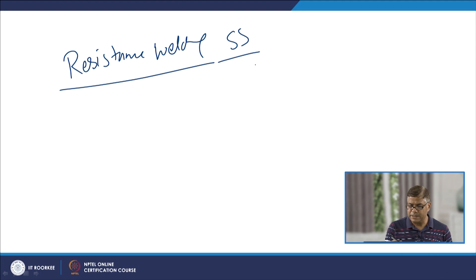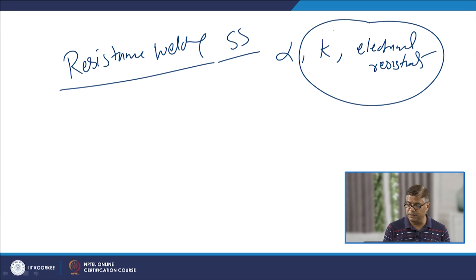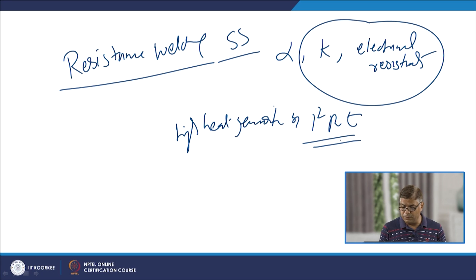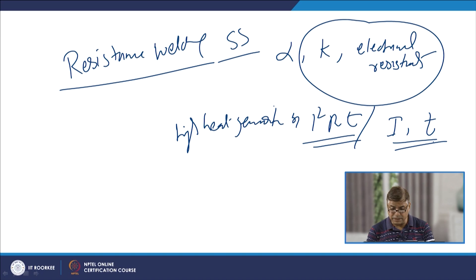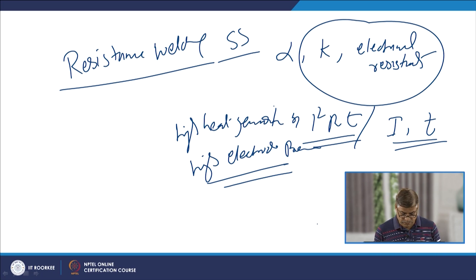Regarding resistance welding of stainless steels: stainless steels differ significantly from carbon steels in thermal expansion coefficient, thermal conductivity, and electrical resistivity. The high electrical resistivity and low thermal conductivity facilitate high heat generation by the I²R principle, reducing welding current requirements and weld cycle time. However, due to the higher yield strength of stainless steels, higher electrode pressure is needed for consolidation during resistance welding compared to carbon steels.